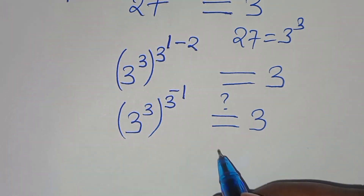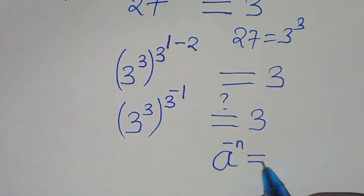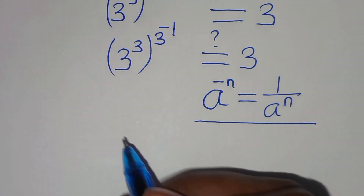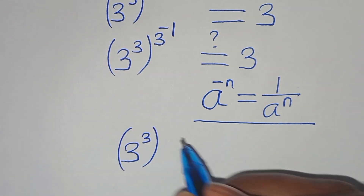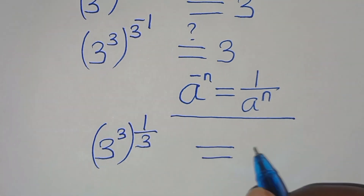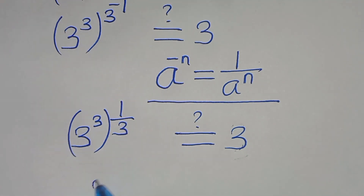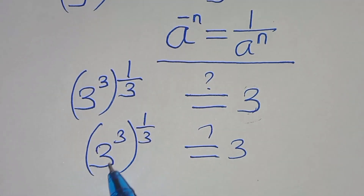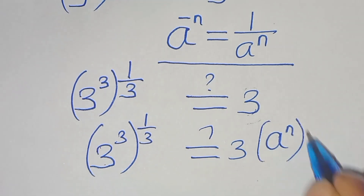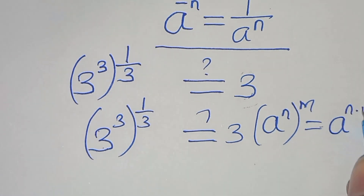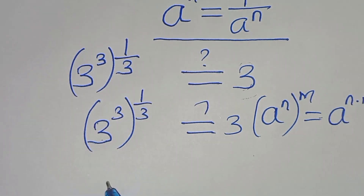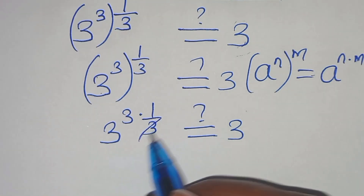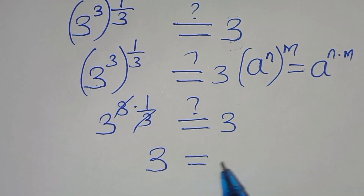Recall that a to the power of negative n equals 1 over a to the power of n. Applying this, 3 raised to the power of negative 1 becomes 1 over 3. So we have 3 to the power of 3 raised to the power of 1 over 3. Using the property (a^n)^m = a^(n times m), this gives 3 to the power of 3 times 1 over 3. The 3s cancel, leaving 3 to the power of 1, which equals 3. So the left-hand side equals 3.